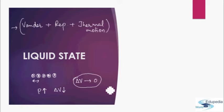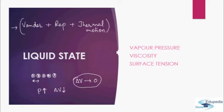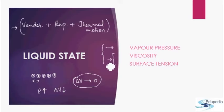We don't have to study liquid state in great detail. We will only focus on three properties: vapor pressure, viscosity, and surface tension. Of these three, vapor pressure is something you will study in more detail in class 12th physical chemistry, and viscosity and surface tension are properties you will study in physics. We will just look at definitions, maybe one or two graphs or formulas, but won't go into details.